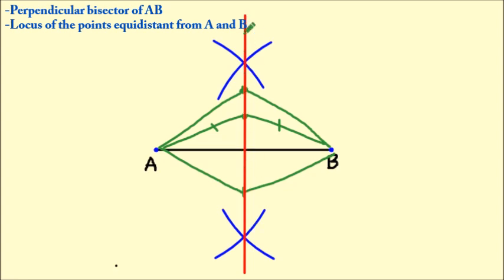they will be along this red line. That's why it's also called the locus of all the points which are equidistant from A and B.